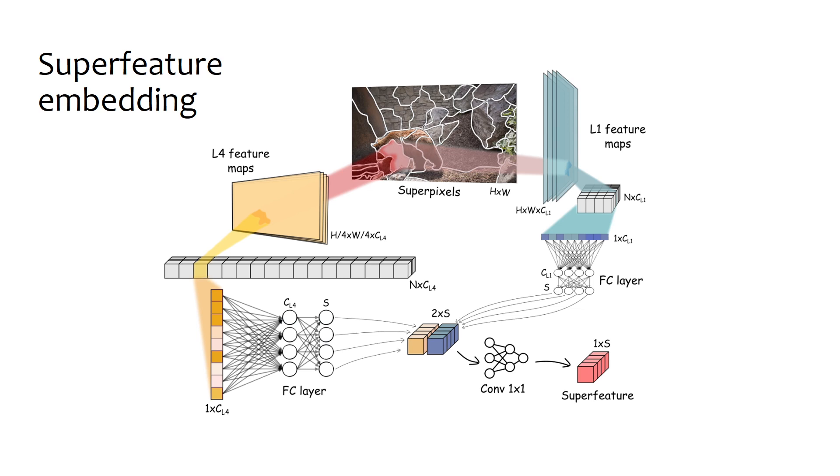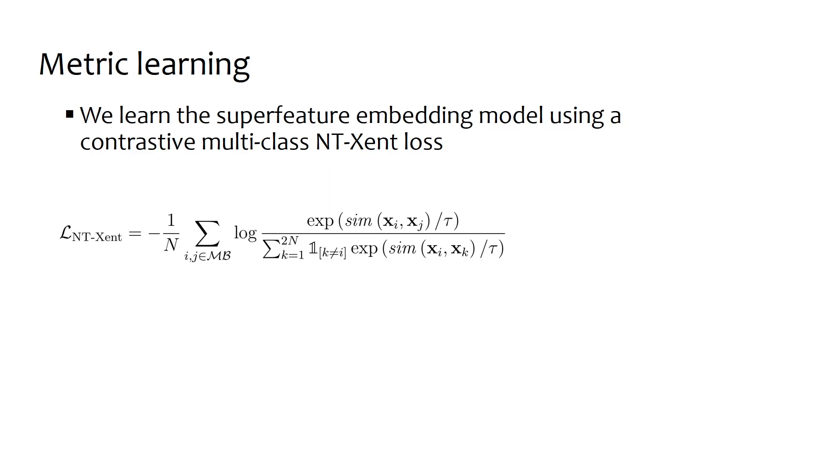Our Super Feature Embedding Model computes the average feature value inside each super pixel. Dense layers and one-by-one convolution are used to combine the output vectors from different feature maps into a single super feature. The super feature generation process is driven by a multi-class contrastive loss, which pushes away super features of different objects while bringing closer super features belonging to the same object.